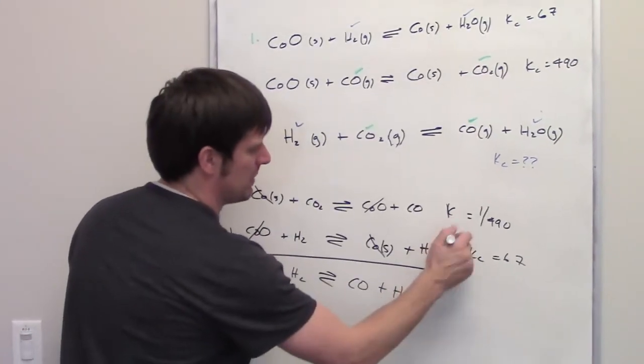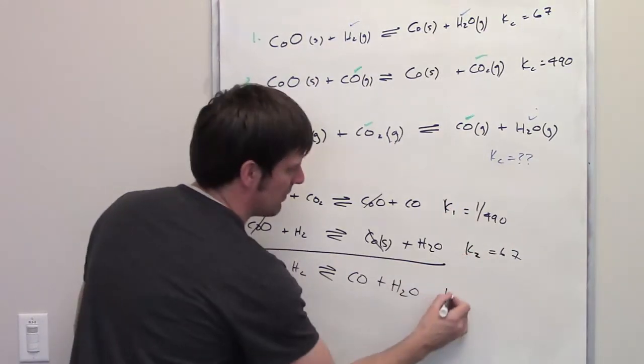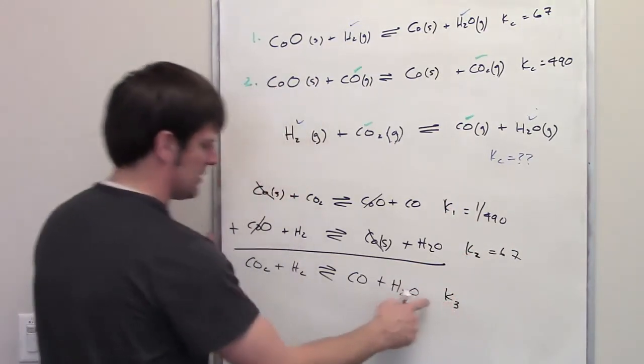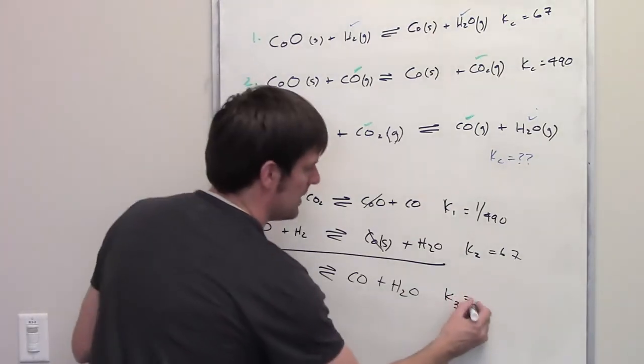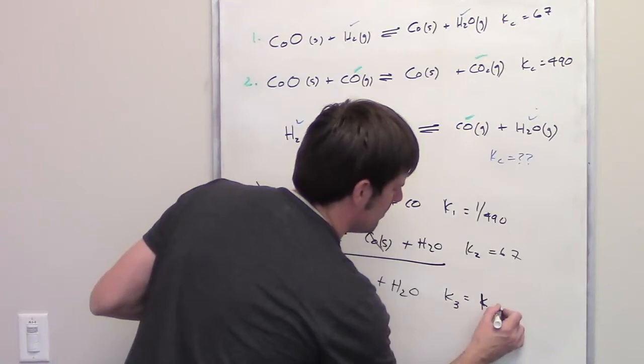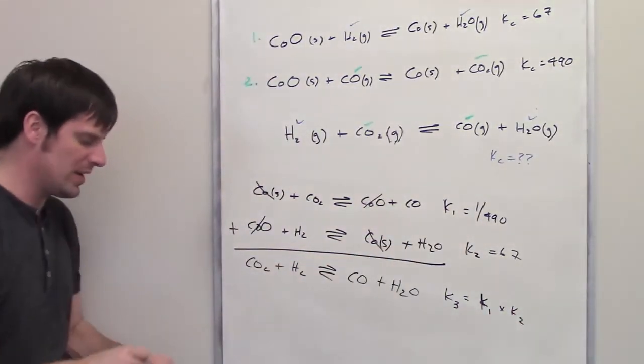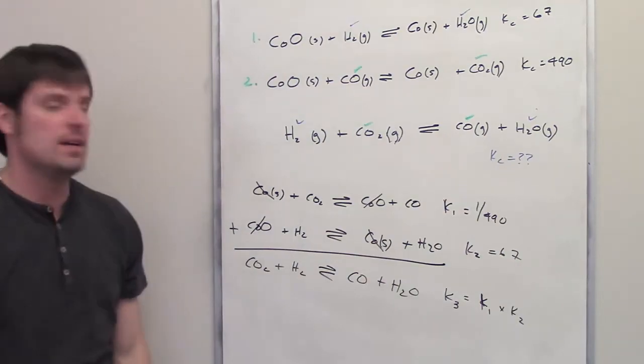So this first Kc value I'm going to call K1. The second one I'm going to call K2. And whatever the K value is for this, I'm going to call K3. K3 then is going to be equal to K1 multiplied by K2. I'll let you throw those into your calculator to get an actual answer to that on your own.